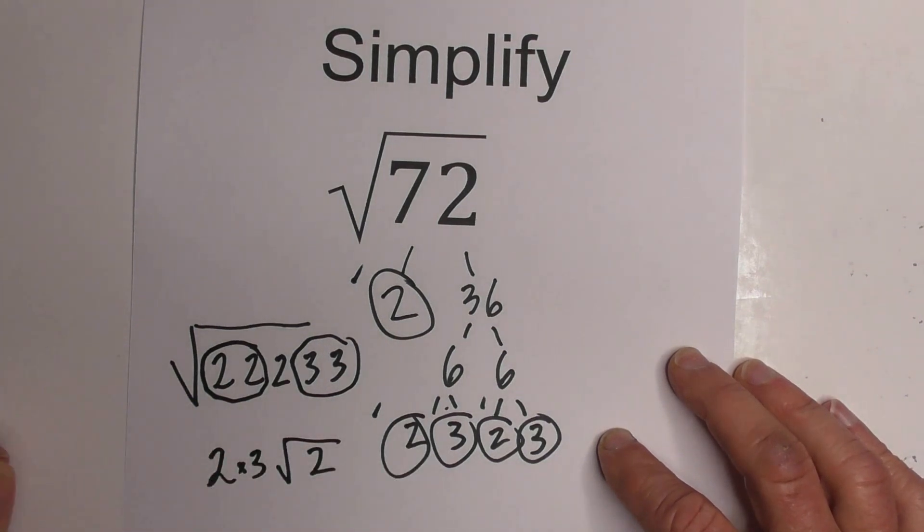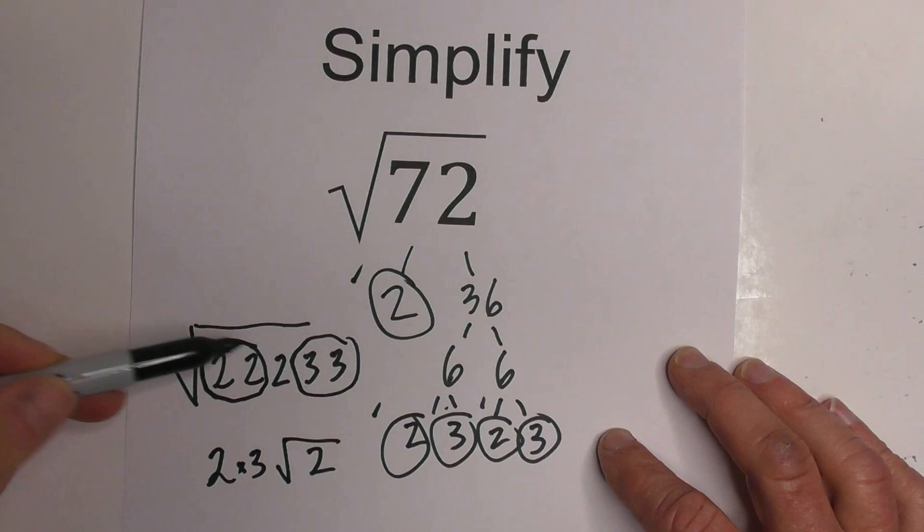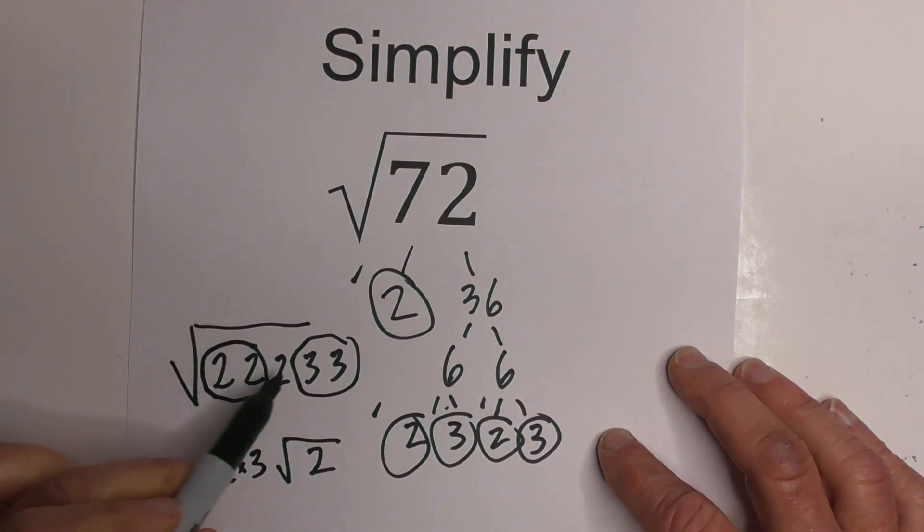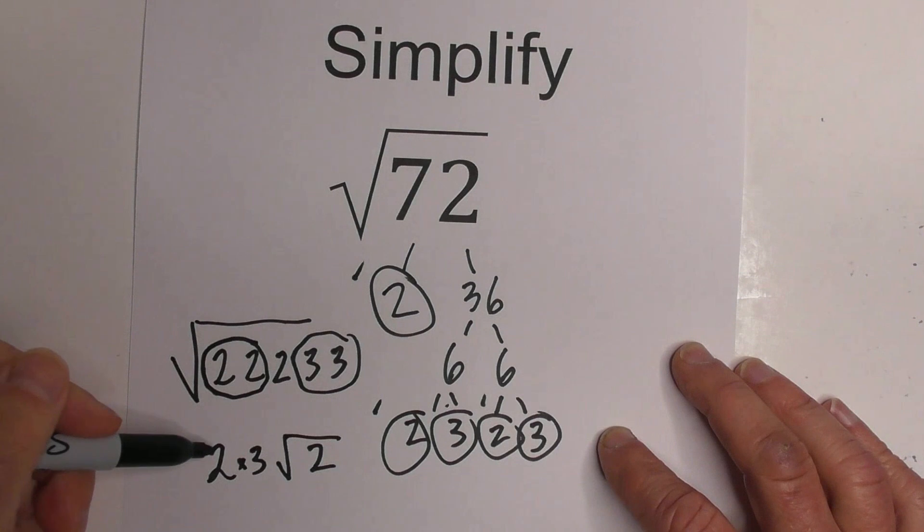One reason why I like this is if you were going to get a cube root, then you would pull out 3's. Therefore, I could pull out the 2's because you have three 2's. I just think it makes it a little bit easier.